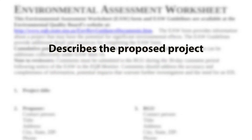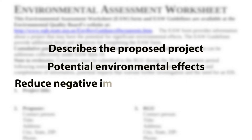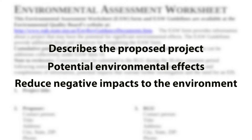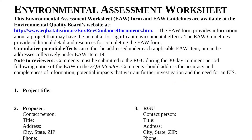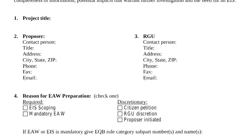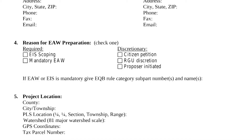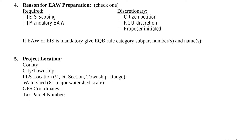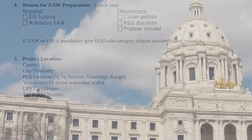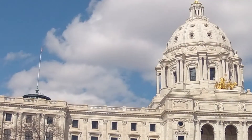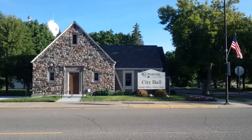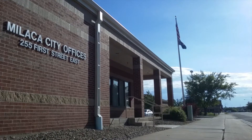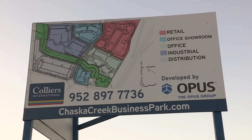The EAW describes the proposed project, details its potential environmental effects, and identifies ways to reduce negative impacts to the environment. The development of the Environmental Assessment Worksheet is not an approval process. It provides information about the project to the project proposer and members of the public. It also helps state agencies, cities, counties, and other governmental units make better informed decisions when issuing permits or approvals.